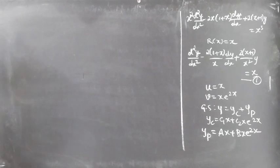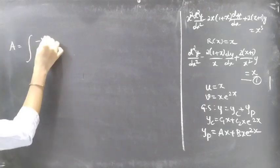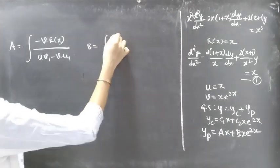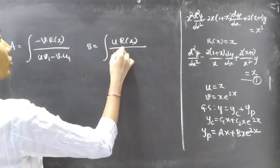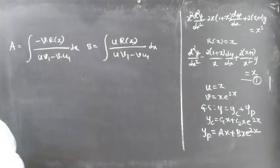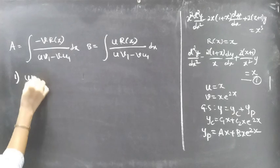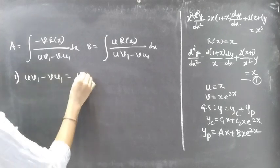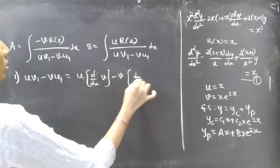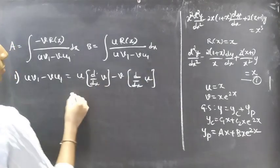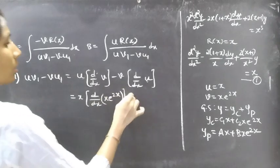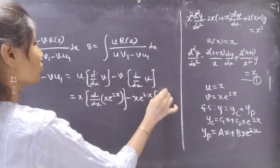We find a and b using the formulae: a = ∫ −v·r(x) / (uv₁ − vu₁) dx and b = ∫ u·r(x) / (uv₁ − vu₁) dx, where v₁ is the derivative of v and u₁ is the derivative of u. Since uv₁ − vu₁ appears in both formulae, let's compute it first.